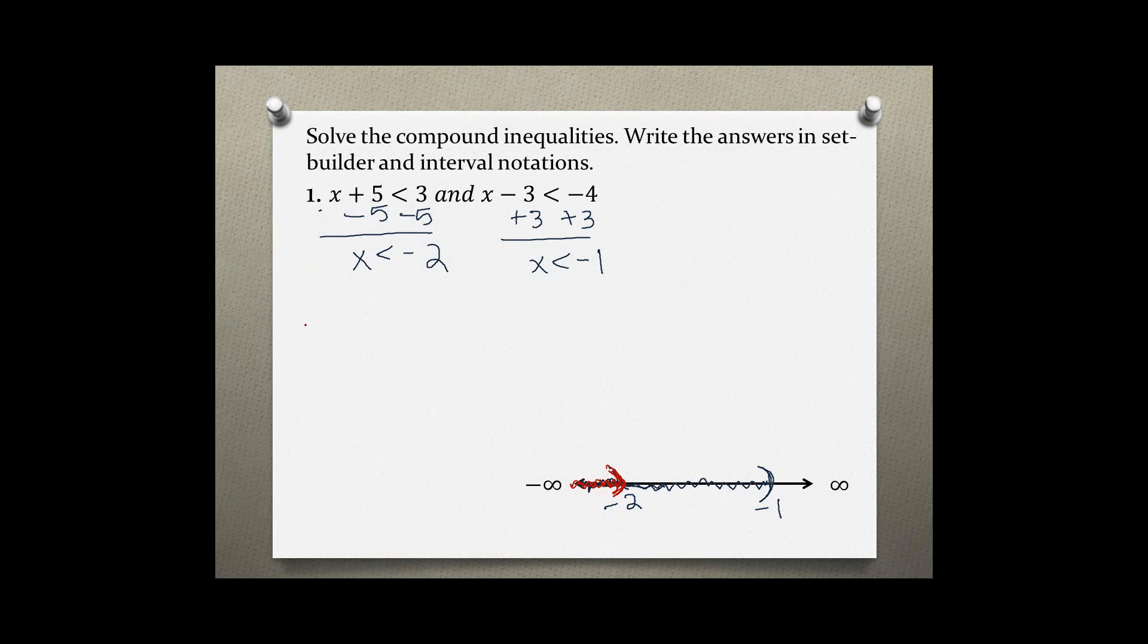So in set builder notation, all values of x such that x is less than negative 2.